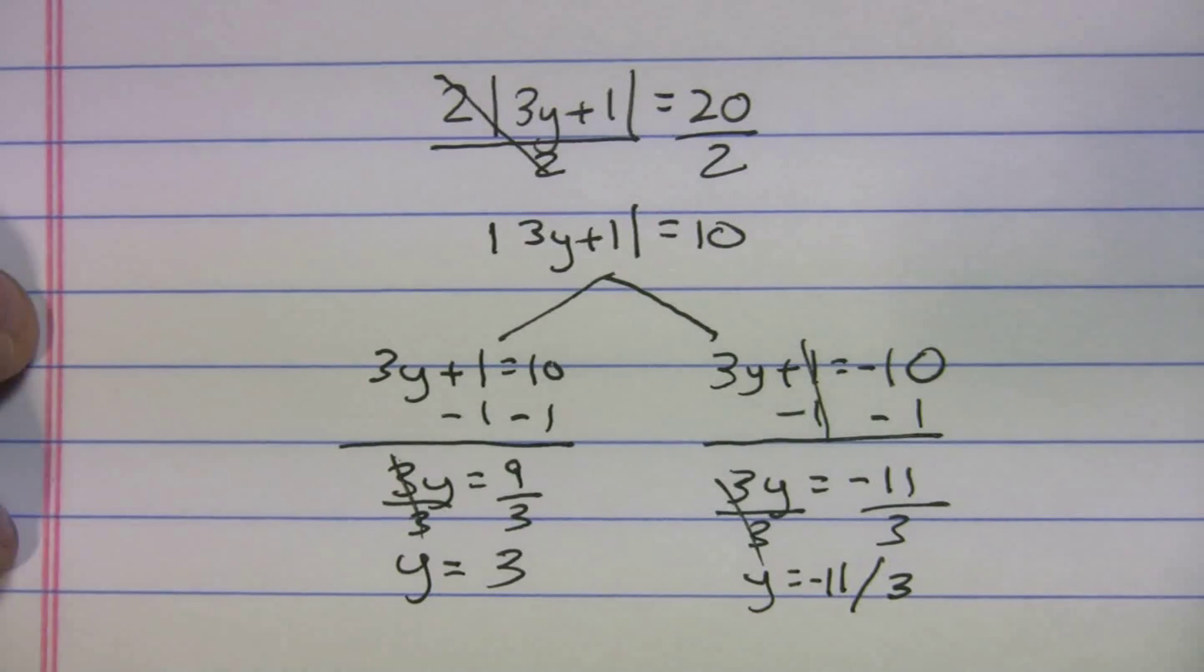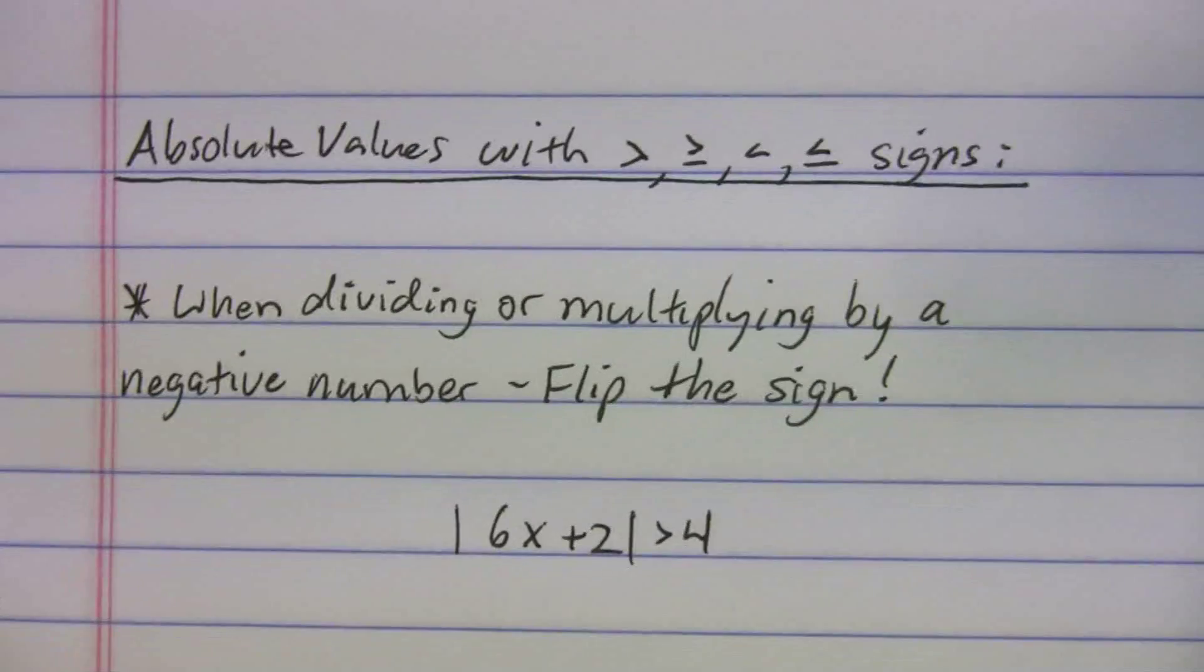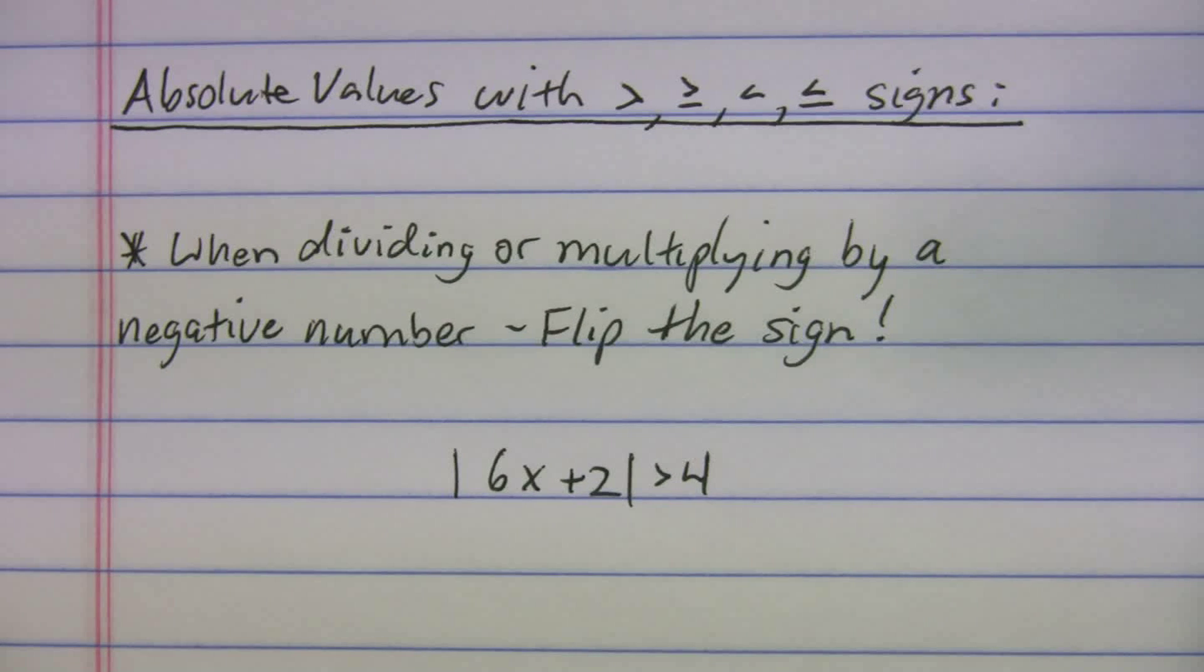Let's talk about when we have those other symbols like the greater than, less than, and all that stuff. So absolute values with greater than, less than, all those signs. One key thing to remember: when you divide or multiply by a negative number, you have to flip the sign. That's really, really important.